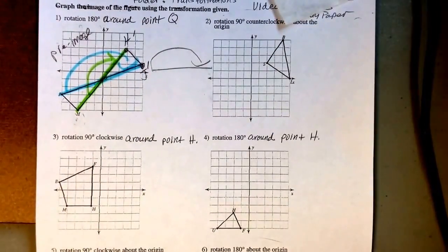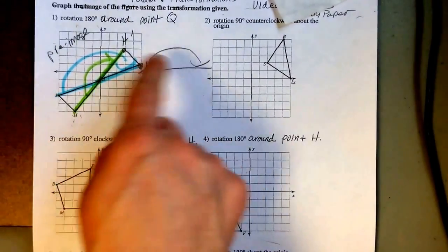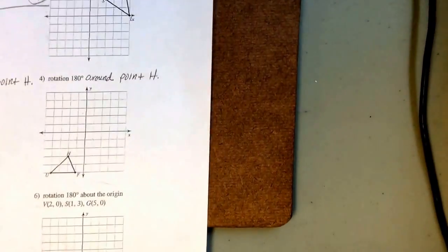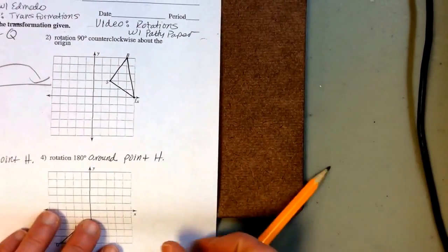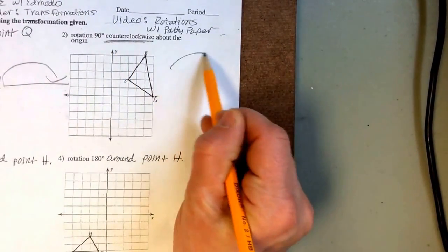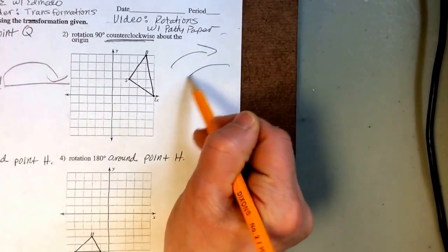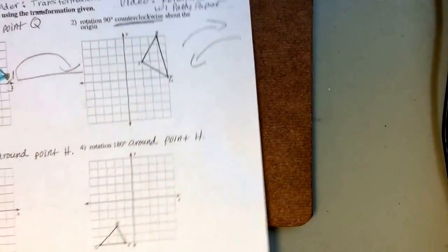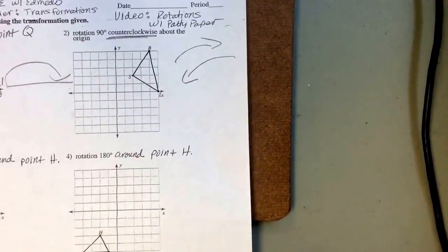That's how you rotate around a point that's on the shape. Number two is a little different — it gives us a direction, counterclockwise. Clockwise is the direction a clock goes; counterclockwise is the opposite direction. Also, in the last example we rotated around a point on the shape, but this time we're rotating around the origin.